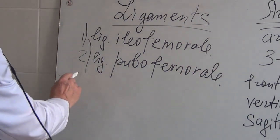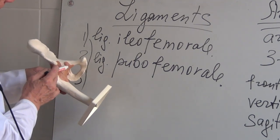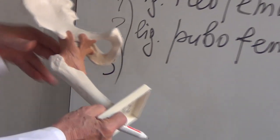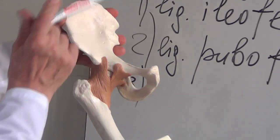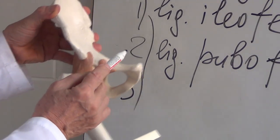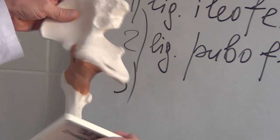So pubofemorale. You remember that hip bone consists of three different bones. Os ilium, os pubis. So ligamentum iliofemorale, os pubofemorale, and os ischii.